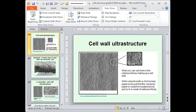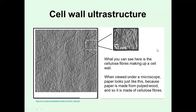So carrying on with the structure of the cell. We were busy with the structure of the cell wall. Remember, animal cells don't have a cell wall, but plant cells do, and so do a lot of microorganisms. And I left off by saying that the plant cell wall is made up of cellulose fibers — just like if you cut a whole lot of pieces of string and spread them out and piled them up on top of each other on your desk.